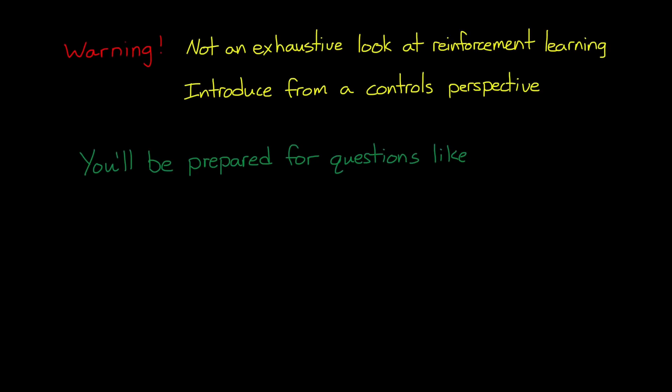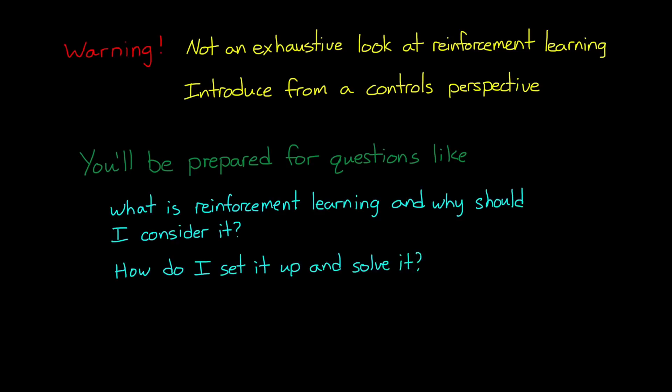Now a quick warning before we begin. This is not intended to be an exhaustive look at reinforcement learning. I wouldn't be qualified to explain it all to you anyway. Instead I want to introduce this topic from the point of view of a traditionally trained controls engineer. And I hope to show you that there's actually a lot of overlap with control theory. By the end of this series I think you'll be better prepared to answer questions like, what is reinforcement learning and why should I consider it when solving my control problem? How do I set up and solve the reinforcement learning problem? And what are some of the benefits and drawbacks of reinforcement learning compared to a traditional controls approach?